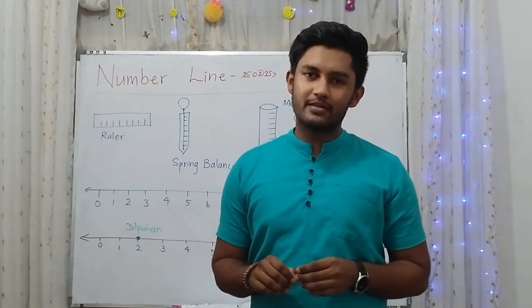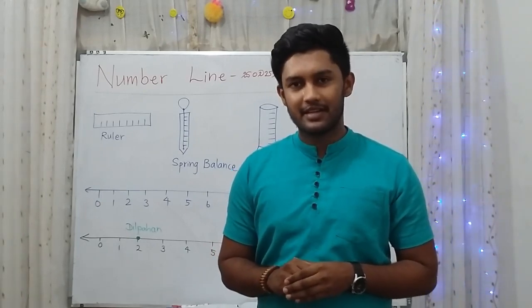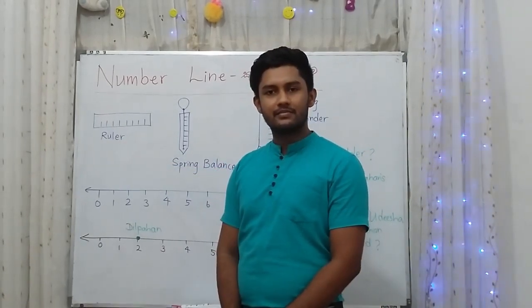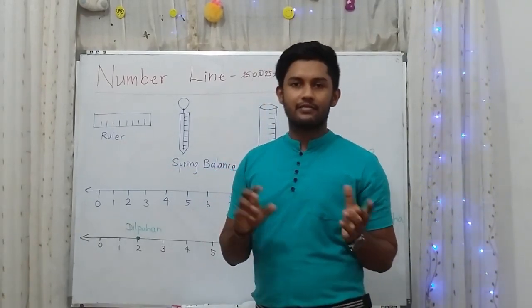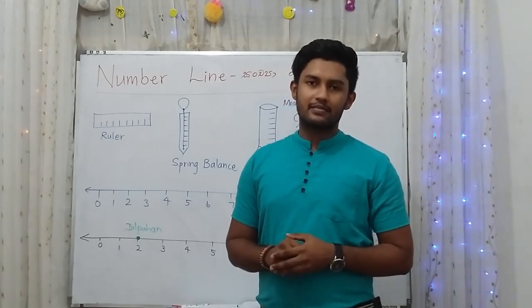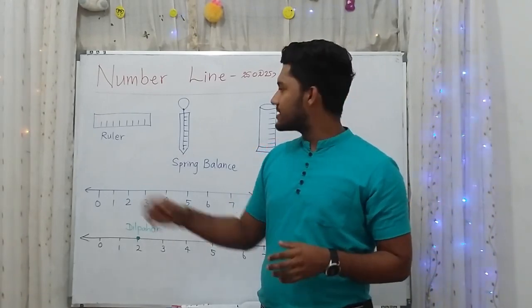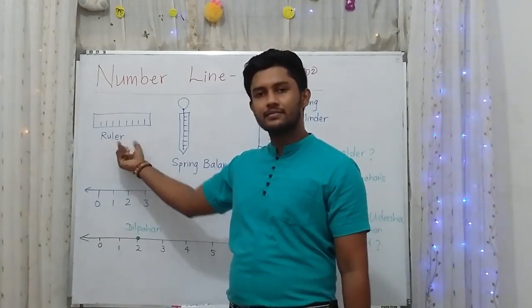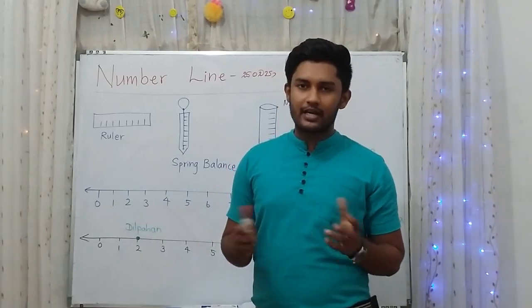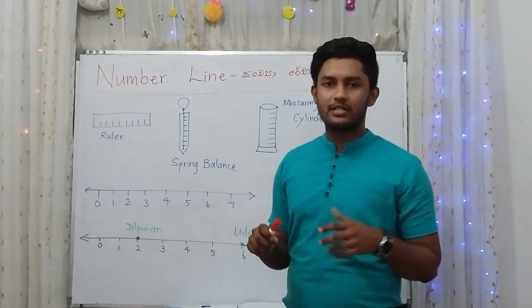Can you remember the ruler you are using to draw straight lines? That ruler is also a number line — there are numbers on it. You can find or categorize it as a number line.